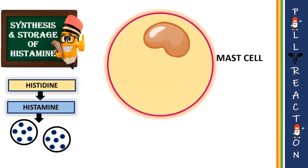Moving on to the structure of mast cells: mast cells mediate inflammatory responses such as hypersensitivity and allergic reactions. They are scattered throughout the connective tissue of the body, especially beneath the surface of the skin, near the blood vessels, lymphatic vessels, within the nerves, throughout the respiratory system, and digestive system.